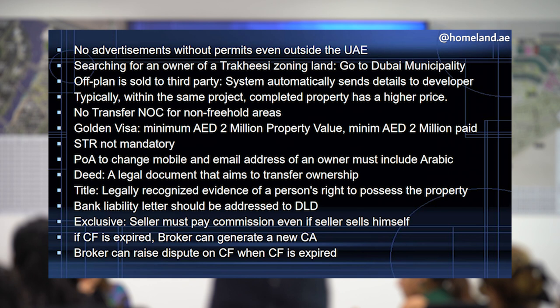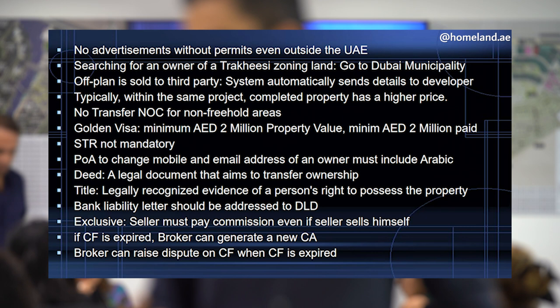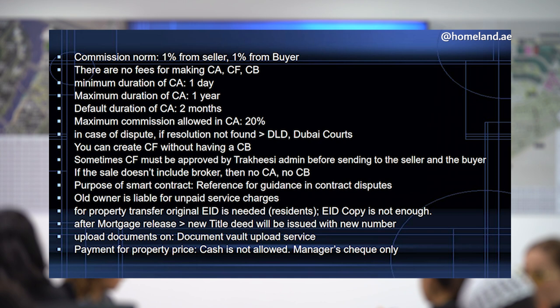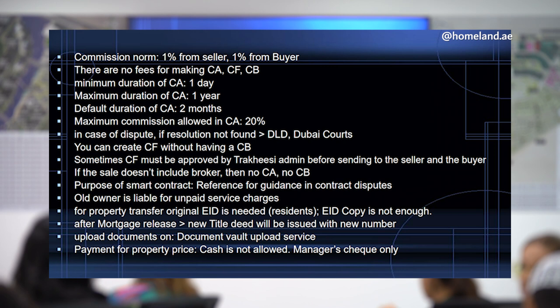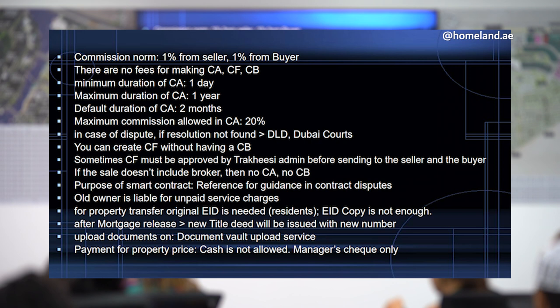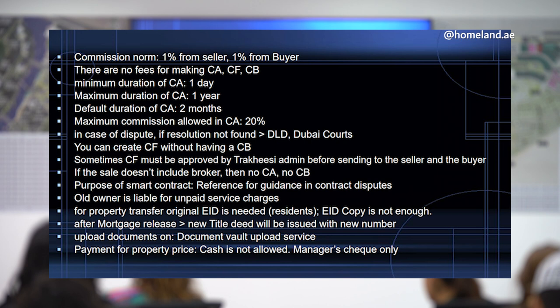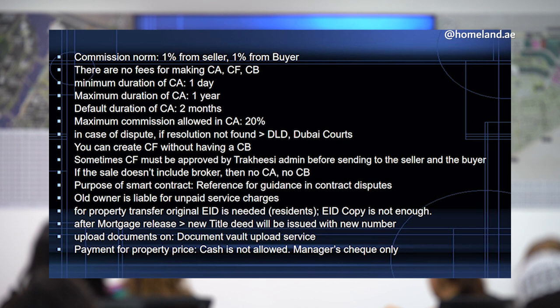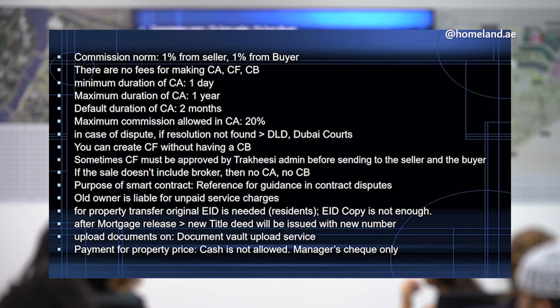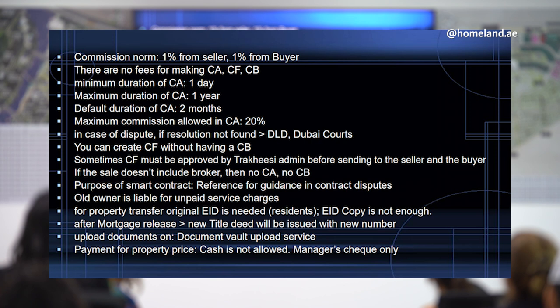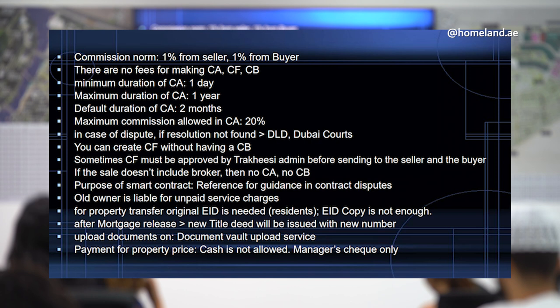Minimum commission in a CA: 0%. Maximum: 20%. The industry norm is 1% from the seller and 1% from the buyer. There are no fees to make a CA, CB, or CF — the contract fee is zero; commission is a separate matter. Minimum duration of CA: 1 day. Default duration: 2 months. Maximum duration: 1 year.